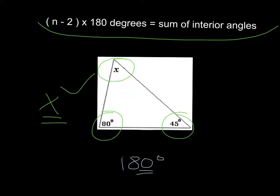So n minus 2 times 180. In this case, for a triangle, n would be 3, so that would be 3 minus 2. So 3 minus 2 would be 1, so the brackets would be 1. So 1 times 180 is the sum of the interior angles. That means that's all I have to add up to. So 1 times 180 is just 180.